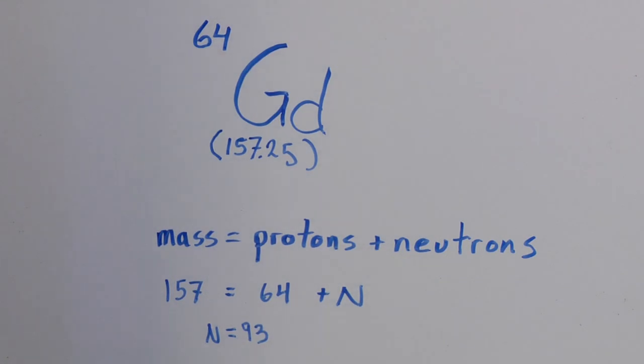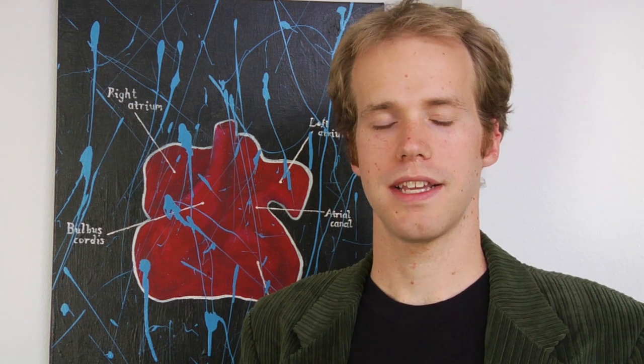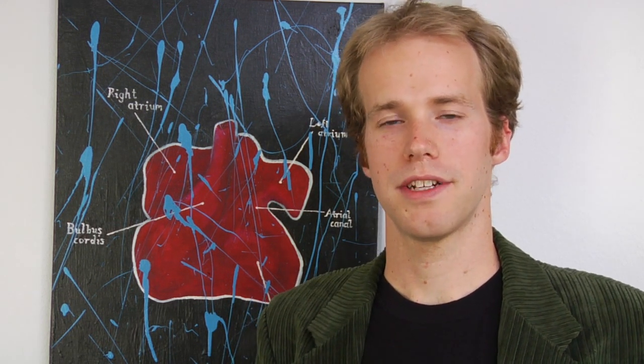So gadolinium, in general, has 93 neutrons. Keep in mind that it does have a few different isotopes, which means that the number of neutrons varies. But in general, if you're going to answer the question, gadolinium has 93 neutrons.